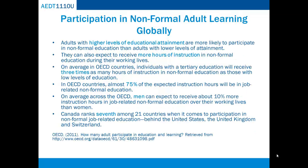Also according to the OECD, adults with higher levels of education attainment are more likely to participate in non-formal education than adults with lower levels of attainment, and can expect to receive more hours of instruction in non-formal education during their work lives. On average in OECD countries, individuals with a tertiary education will receive three times as many hours of instruction in non-formal education as those with low levels of education. Almost 75% of expected instruction hours will be job-related non-formal education. On average across the OECD, men can expect to receive about 10% more instruction hours in job-related non-formal education over their working lives than women.